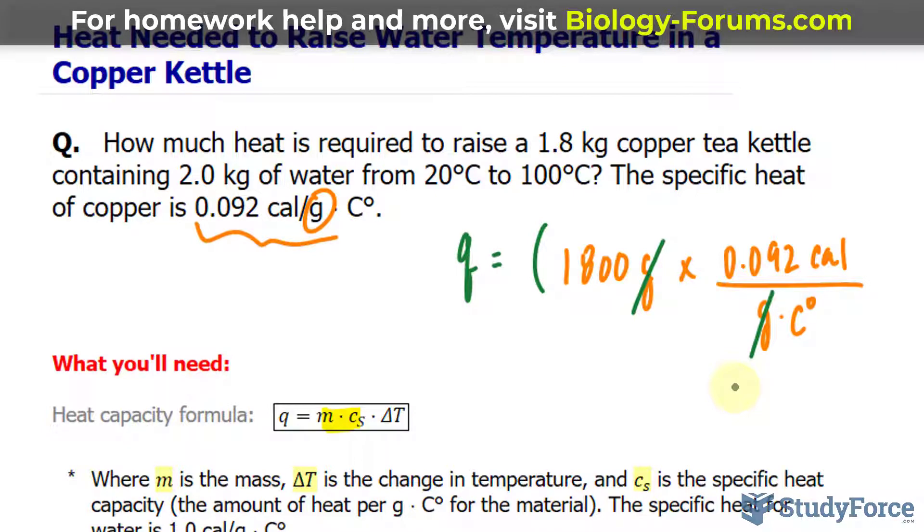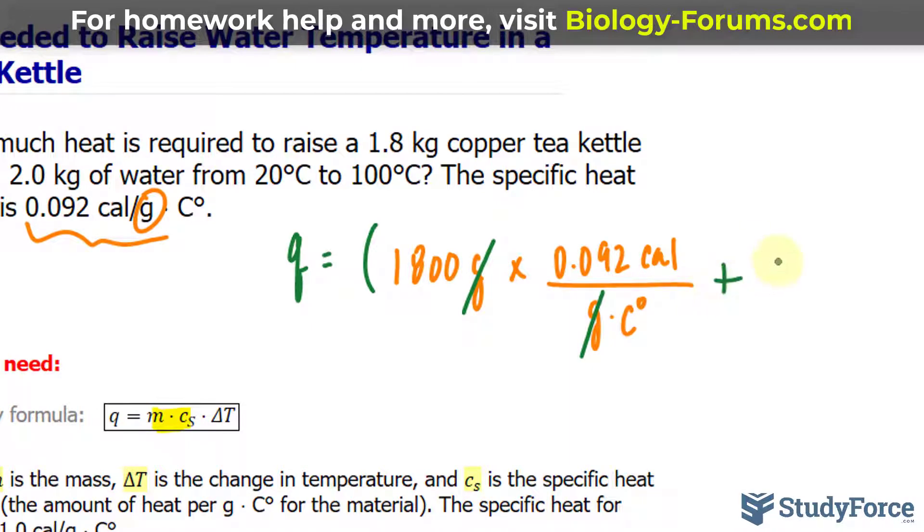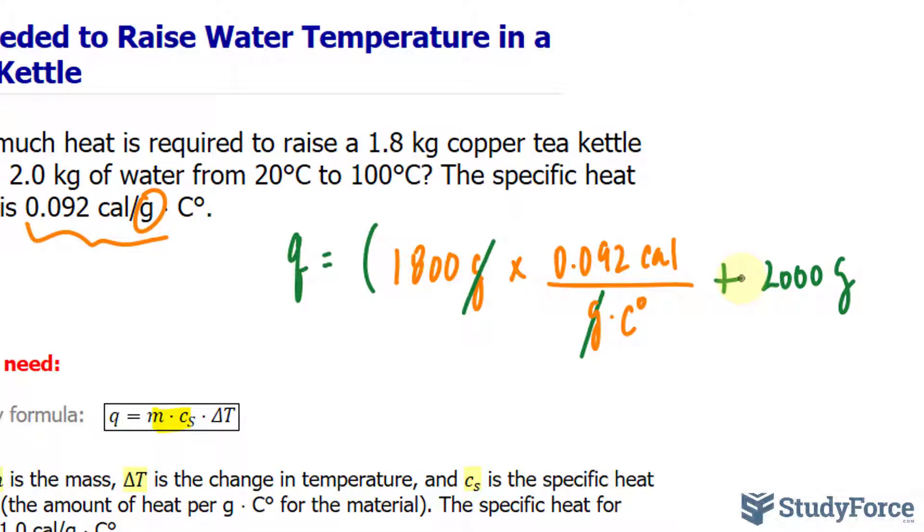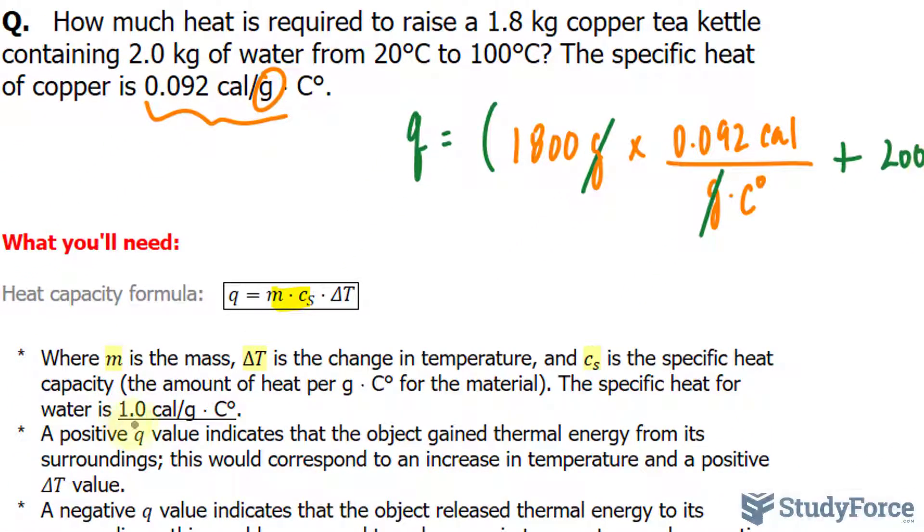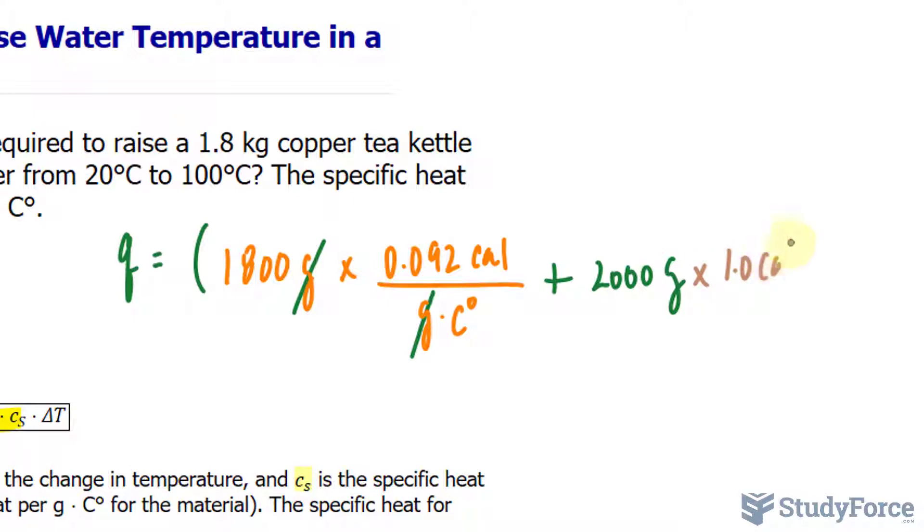We also have to consider the water. The water is 2.0 kilograms. So I'll write down plus 2.0 kilograms made into grams is 2,000 grams. You may also write this down into scientific notation if you want to retain the amount of significant figures. But I'll just remember that this is two significant figures. That gets multiplied to its specific heat capacity, which is written right here as 1.0 calories per grams times Celsius. 1.0 calories per gram times Celsius. Again, the units cancel out nicely.